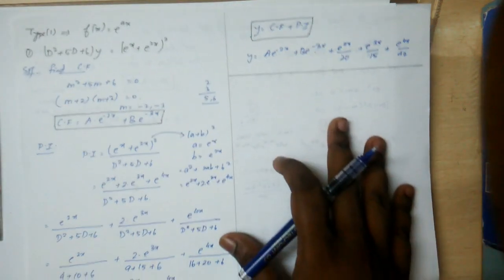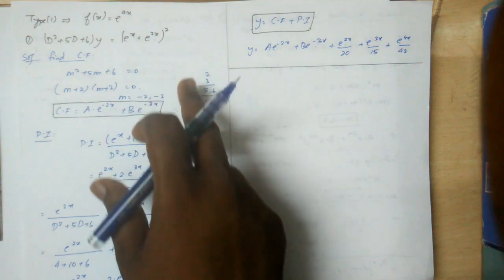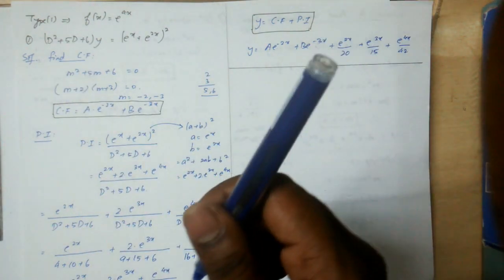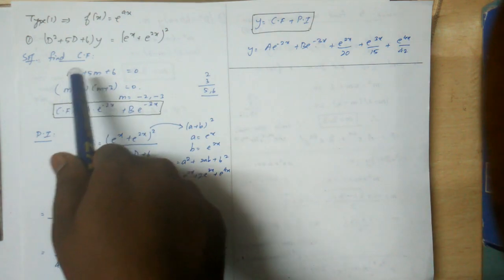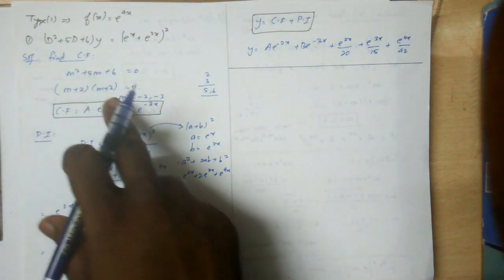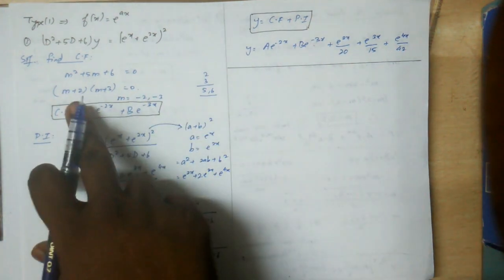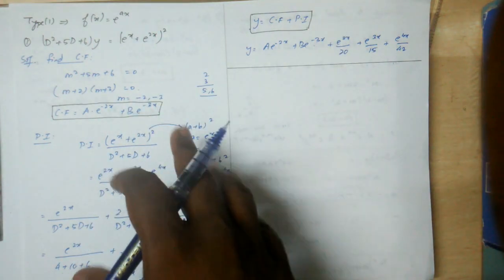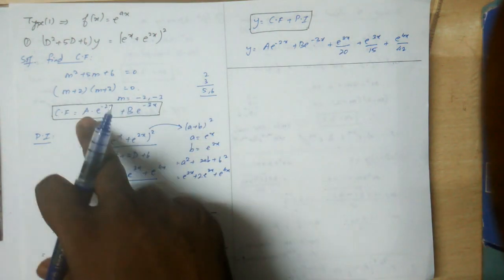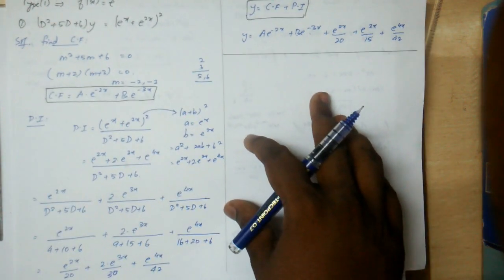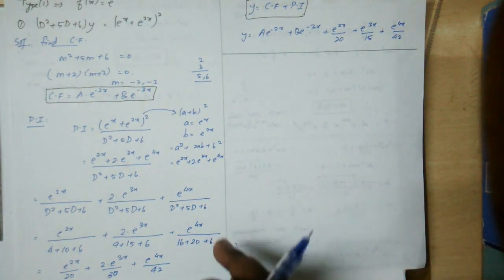First, find the complementary function (CF). The characteristic equation is m² + 5m + 6 = 0, which factorizes to give roots -2 and -3. These are real roots, so CF = Ae^(-2x) + Be^(-3x).